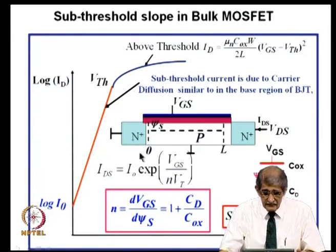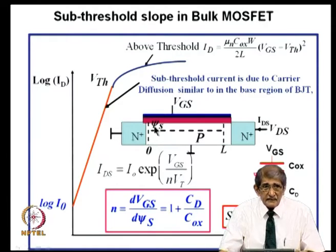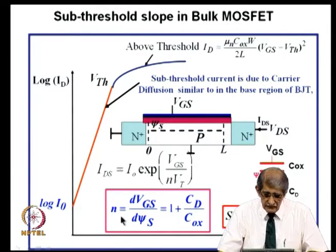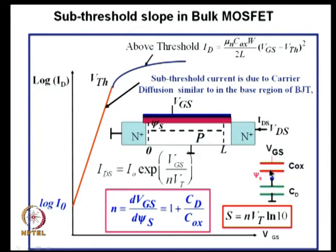We also saw that n can be determined from the relationship delta Vgs by delta psi_s. It tells us how good is the coupling between the gate and the channel. If delta psi_s equals delta Vgs, coupling is excellent. When n equals 1, but since there is a depletion layer, we can derive delta Vgs by delta psi_s using an equivalent circuit. That shows n equals 1 plus Cd by C_oxide, where Cd is the depletion layer capacitance and C_oxide is the oxide capacitance per unit area.